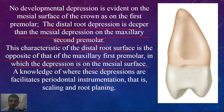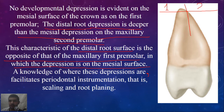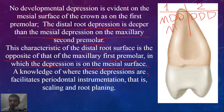The mesial depression is not very obvious, while the distal depression is deep in the second premolar. This characteristic of the distal root surface is the opposite of that of the maxillary first premolar, in which the depression is on the mesial surface. A knowledge of where these depressions are facilitates periodontal instrumentation — that is, scaling and root planing. In the first premolar, the mesial developmental depression is the most prominent one, while in the second premolar, the distal developmental depression is the most prominent one.